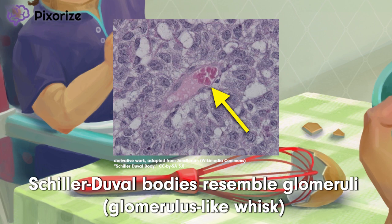While these glomeruli-like Schiller-Duval bodies are found in only 50% of endodermal sinus tumors, their unique appearance makes them high yield on exam day. Instead of saying Schiller-Duval in question stems, questions will often describe structures that resemble glomeruli from gonadal biopsies — just know that they are talking about Schiller-Duval bodies and you'll be good to go on test day.